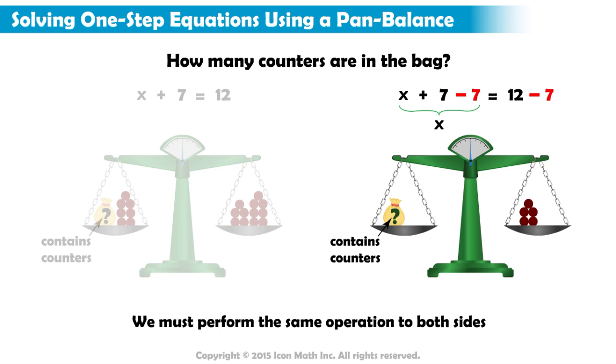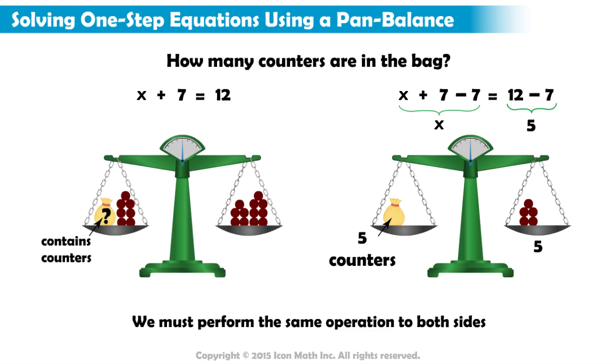Now that we have subtracted 7 counters from both sides of the pan balance, we see the bag alone balances with 5 counters. This means one bag equals 5 counters. The solution to the equation x plus 7 equals 12 is x equals 5.